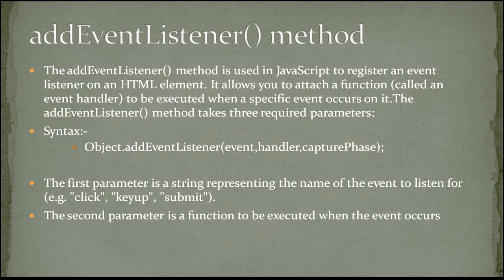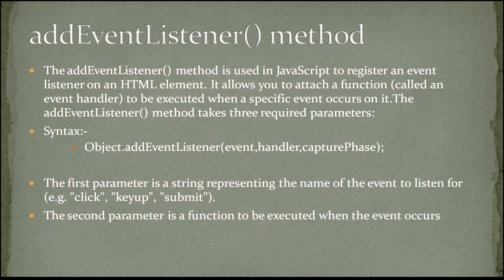The addEventListener method is used in JavaScript to register an event listener on an HTML element. It allows you to attach a function, also called an event handler, to be executed when a specific event occurs. The addEventListener method takes three parameters. The syntax is: object.addEventListener, then we pass three arguments — first is the event, second is the handler, and third is the capture phase.